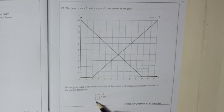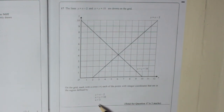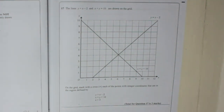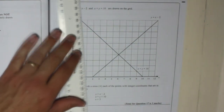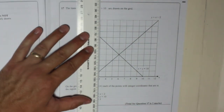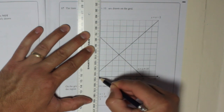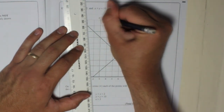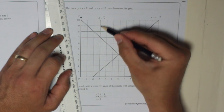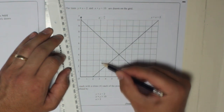Now you've got to do x is greater than 3. So you've got to draw the line x equals 3. All that is, is a line where the x coordinate is always 3 no matter where you go. So that is here — I'm going to draw this line. That's the line x equals 3. Because no matter where you go, the x coordinate is always 3.